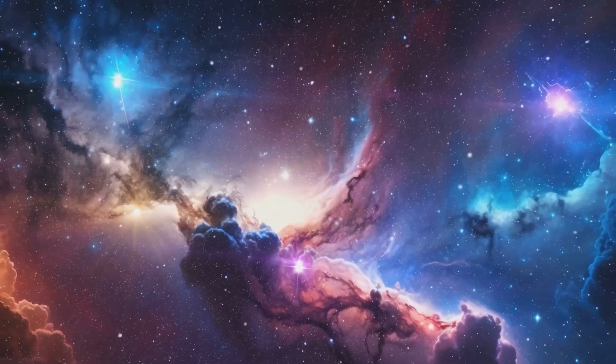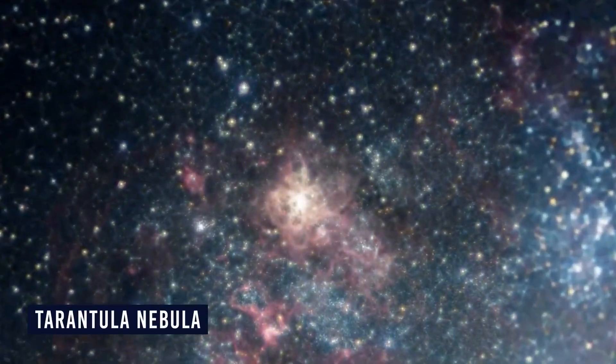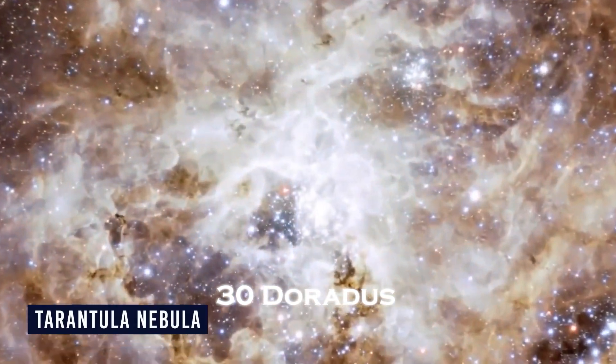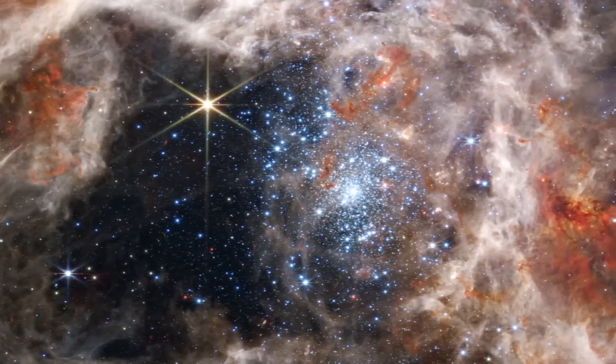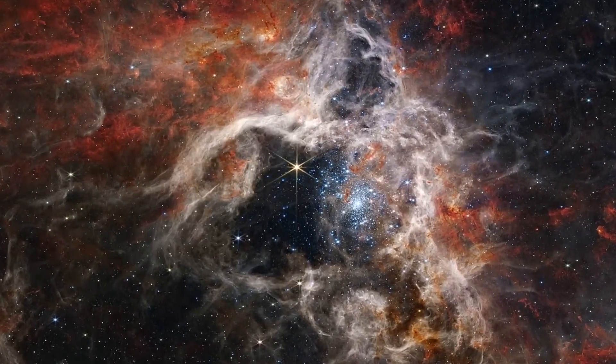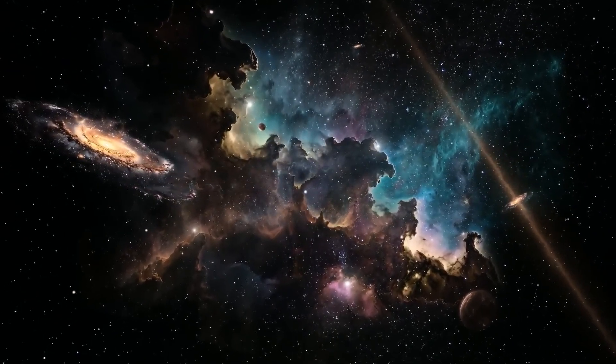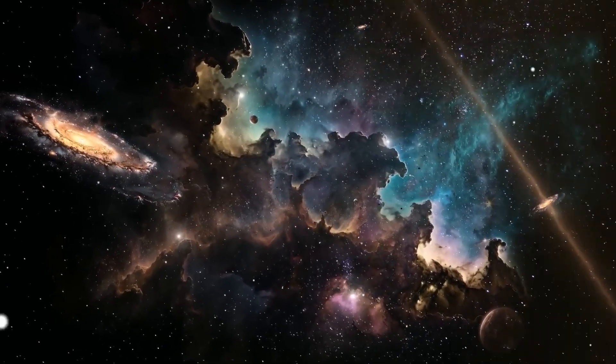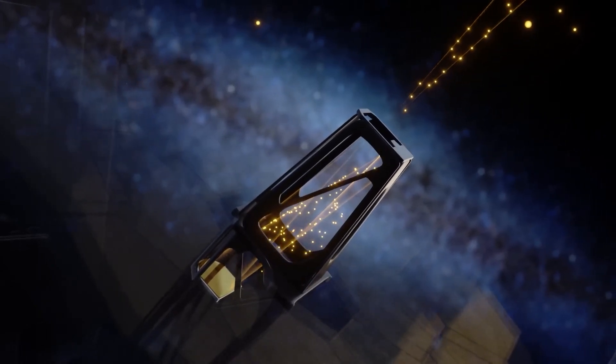Among its discoveries is a cluster within the Tarantula Nebula, known as 30 Doradus. Webb revealed hundreds of young stars and protostars in various stages of development, offering astronomers a real-time view of how stars evolve. These findings could reshape our understanding of how stars form and the role of cosmic dust in the evolution of galaxies.